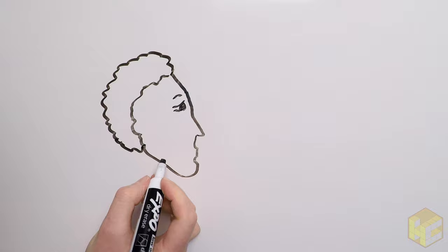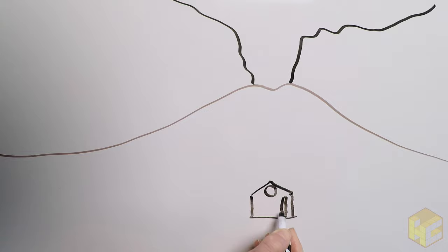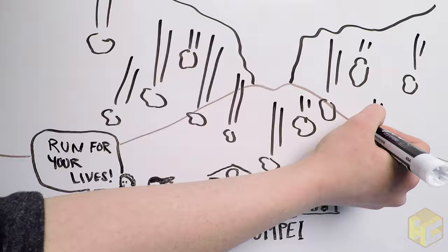Meanwhile, back in Misenum, Pliny the Younger continued to study. While the eruption column was visible from his location, the prevailing wind pushed the pumice away from Misenum and towards Pompeii, Herculaneum, and Stabiae. This phase of the eruption gave many in Pompeii the time to escape, and the choice to leave now would save them their lives.